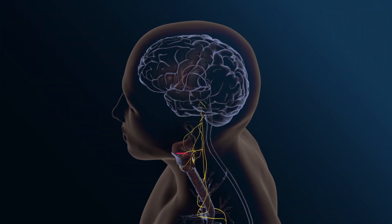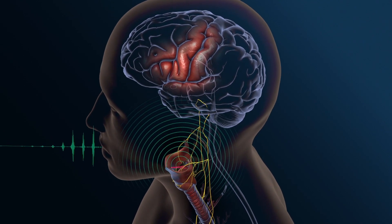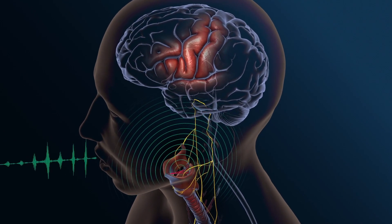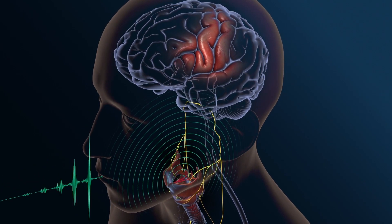Speech is complex. Brain signals precisely coordinate nearly 100 muscles to move the lips, jaw, tongue, and larynx, shaping our breath into sounds that form our words and sentences.